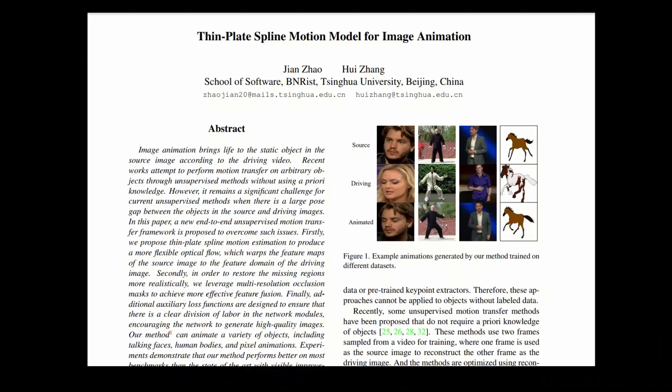The outcome is going to look something like this. The best part is it's open source and free to use, so you can run it on your own machine. The demos I'm about to show you are based on this paper called Spline Motion Model for Image Animation. I will put a link to the paper in the description.